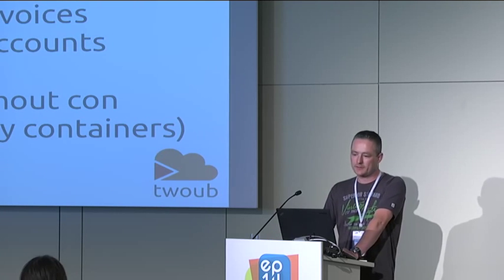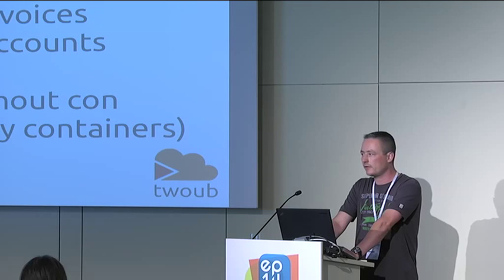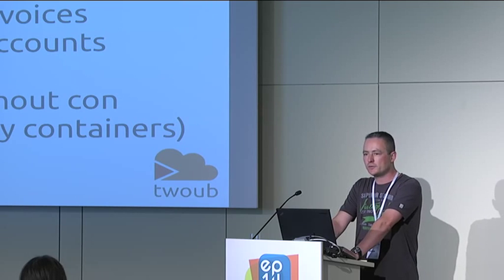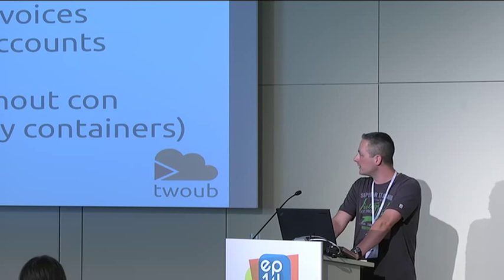The SITE, on the other hand, based on Django and AngularJS, calls CONs — which can be many — via XMLRPC. It does accounting and payment, creates PDF invoices, and manages user accounts, registration, and so on. Also, the SITE works without CON — important for testing and running locally. Of course, when CON isn't available, you won't see any containers.